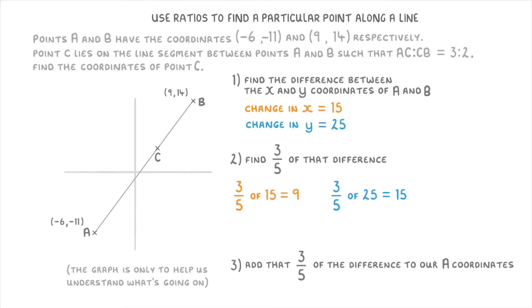And then finally for step three, we need to add 9 to A's x coordinate of negative 6 to find that C's x coordinate is positive 3. And add 15 to A's y coordinate of negative 11 to find that C's y coordinate is positive 4.